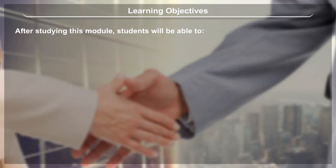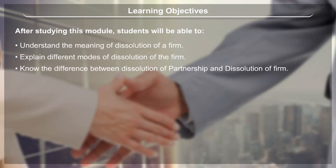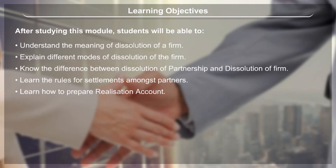Learning Objectives: After studying this module, students will be able to understand the meaning of dissolution of a firm, explain different modes of dissolution of the firm, know the difference between dissolution of partnership and dissolution of firm, learn the rules for settlements amongst partners, learn how to prepare realization account, and learn about the different journal and ledger entries.